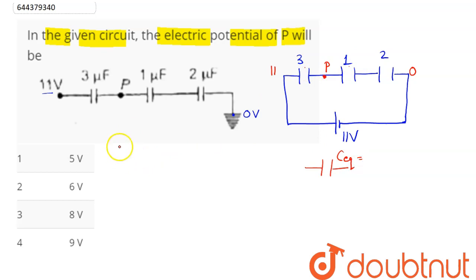C equivalent can be written as 1/C_eq = 1/3 + 1/1 + 1/2. Hence LCM is 6. So this comes as 2 + 6 + 3 which equals C equivalent as 6/11.